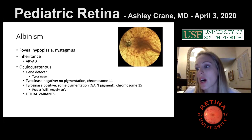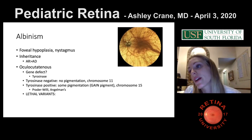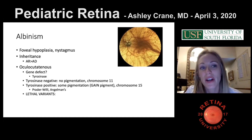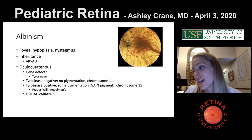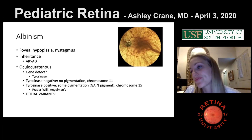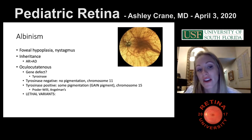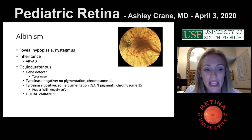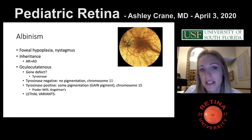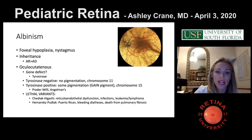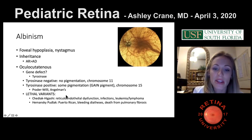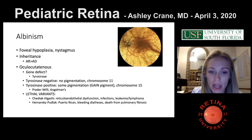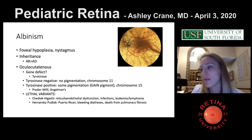There are two lethal variants of albinism. Chediak-Higashi syndrome involves reticuloendothelial dysfunction leading to infections, high rates of leukemia and lymphoma. Hermansky-Pudlak syndrome is most common in Puerto Rican patients and involves bleeding diatheses and platelet anomalies.